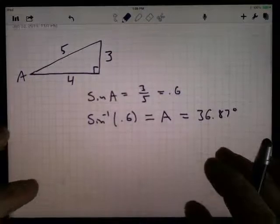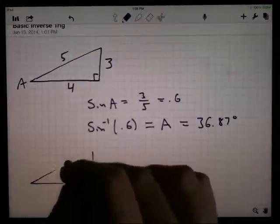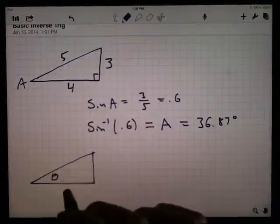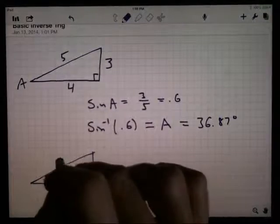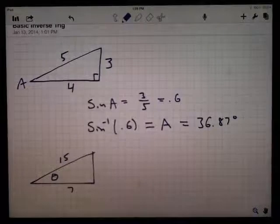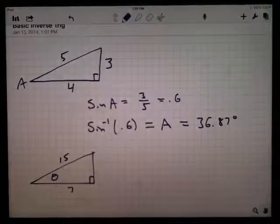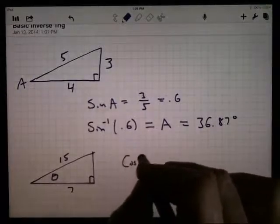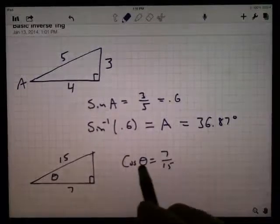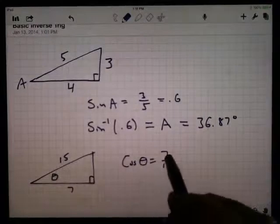Likewise, suppose the information that I know, let's just have a triangle over here. Suppose I know that I'm looking for this angle right here, theta. This is length 7, this is length 15. The question is, what's the angle? Well, this angle, these two sides, the cosine of the angle is 7 over 15. That's the trig relationship. The angle is the input. I have the adjacent side of the hypotenuse, so let's make that a cosine. Cosine is 7 over 15.